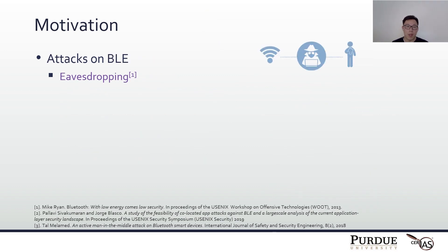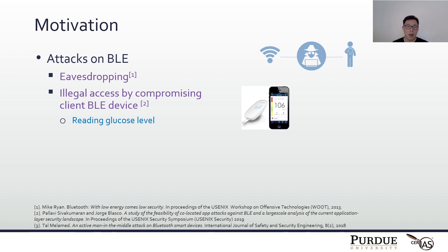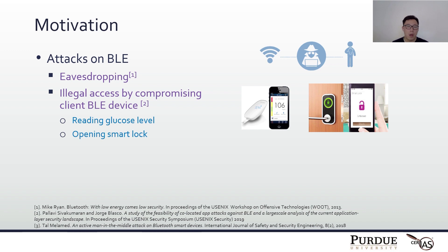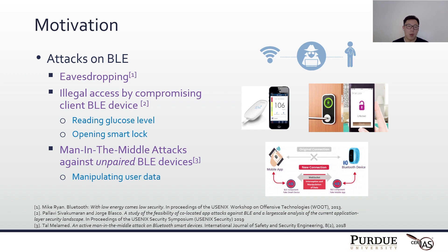Though BLE has those security mechanisms, it's not secure. For example, if two BLE devices are paired using legacy pairing, they are vulnerable to eavesdropping attacks. And if a malicious app is installed on the smartphone, the attacker can illegally access the BLE devices, such as reading a glucose level or opening a smart lock. Or even worse, the attacker can launch man-in-the-middle attacks and manipulate user data against unpaired BLE devices.